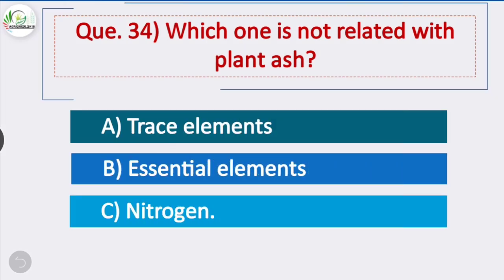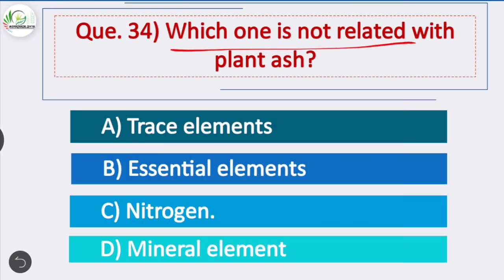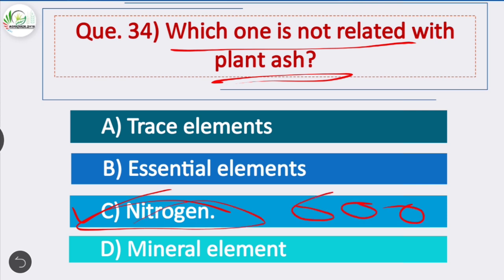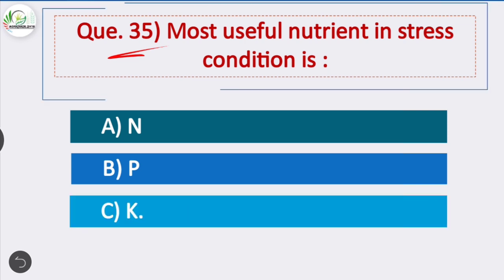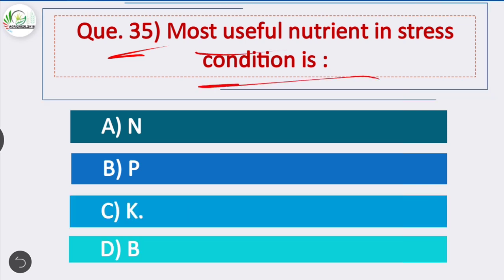Question 34: Which one is not related to plant ash? Option C is correct — nitrogen, because at about 600 degrees Celsius temperature, nitrogen is exhausted and there will be no trace of nitrogen in plant ash. Question 35: The most useful nutrient in trace condition is — option C is correct — potassium, which activates about 40 plus enzymes and is required for various metabolic processes in plants.